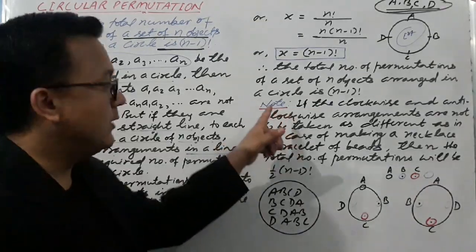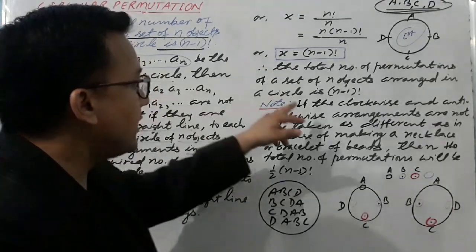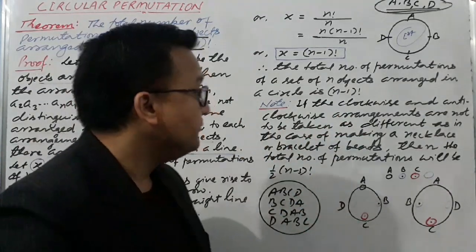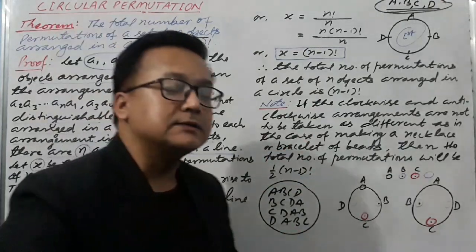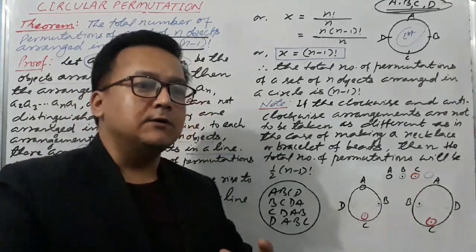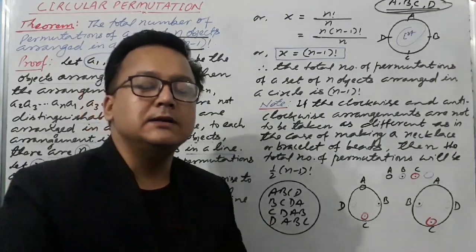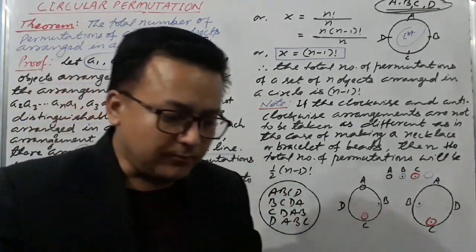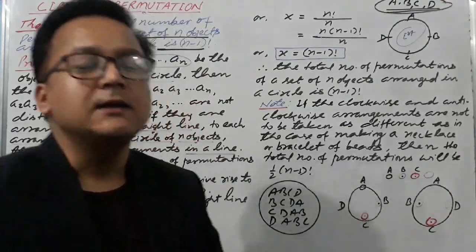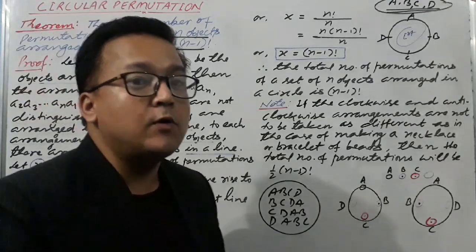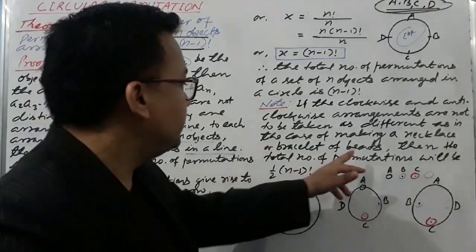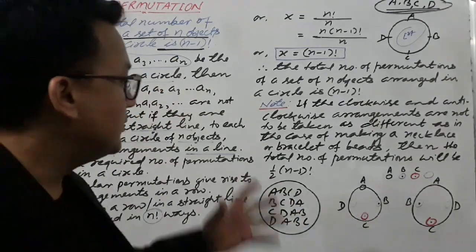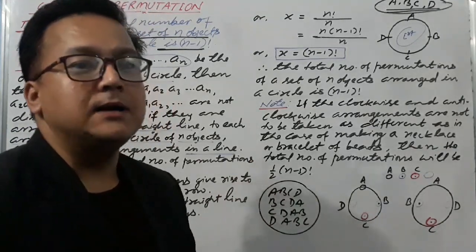Now note one thing which is a little bit different. If the clockwise and anticlockwise arrangements are not to be taken as different — as in the case of making a necklace or a bracelet of beads — then the total number of permutations is half of (N−1) factorial.